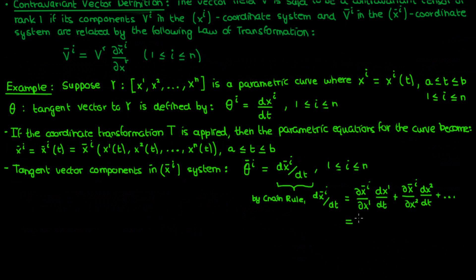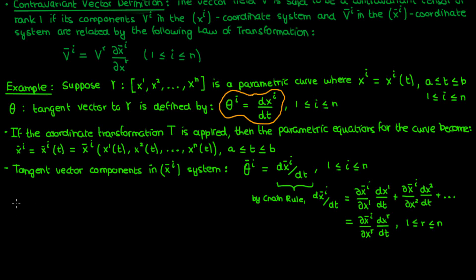I can make this right-hand side more compact using Einstein notation and replacing the x1s, x2s, etc. with just xr. Note that r is a dummy index that runs from 1 to n. We have to sum these n terms on the right to get our derivative in the new coordinate system d xi bar dt. Now the derivative of xr with respect to t is actually just the tangent vector component from before the coordinate transformation, which is theta super r. So we can write the new tangent vector component theta super i bar as the old tangent vector component theta super r times the partial derivative of the new coordinate xi bar with respect to the old coordinates xr. Again, r is the dummy index, so it's being summed over.